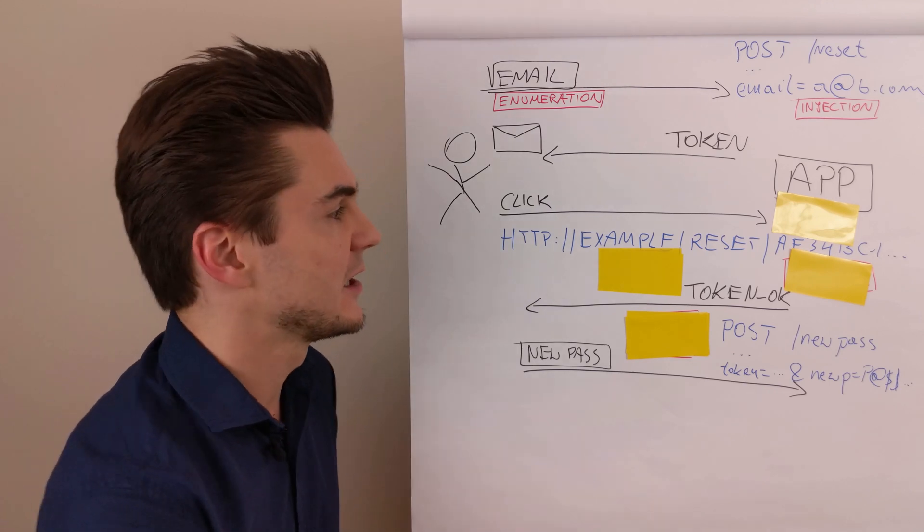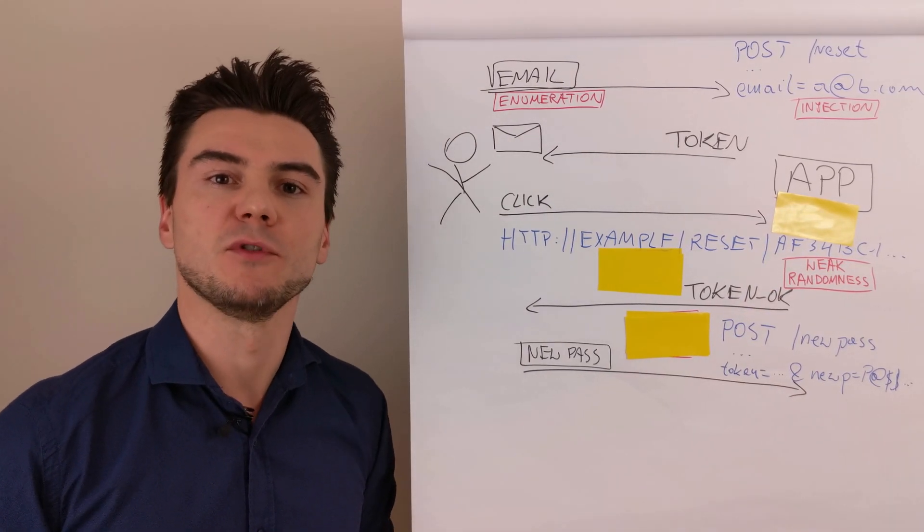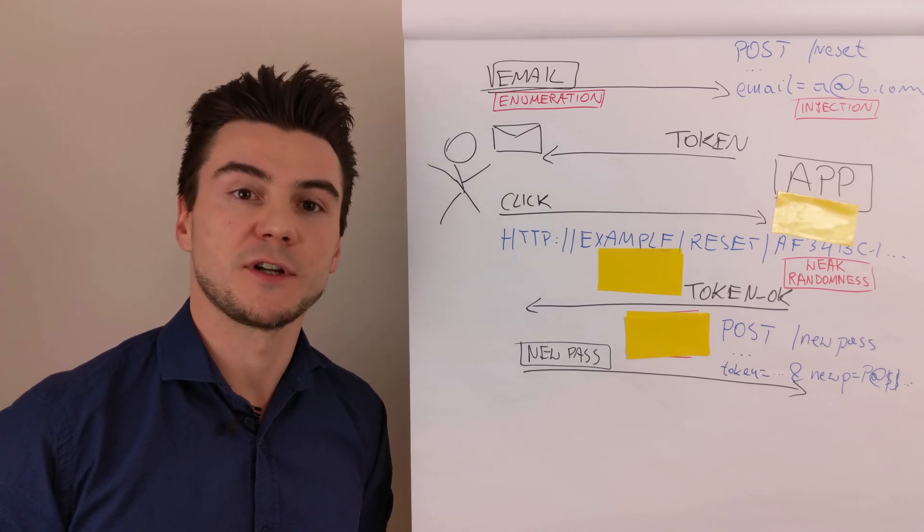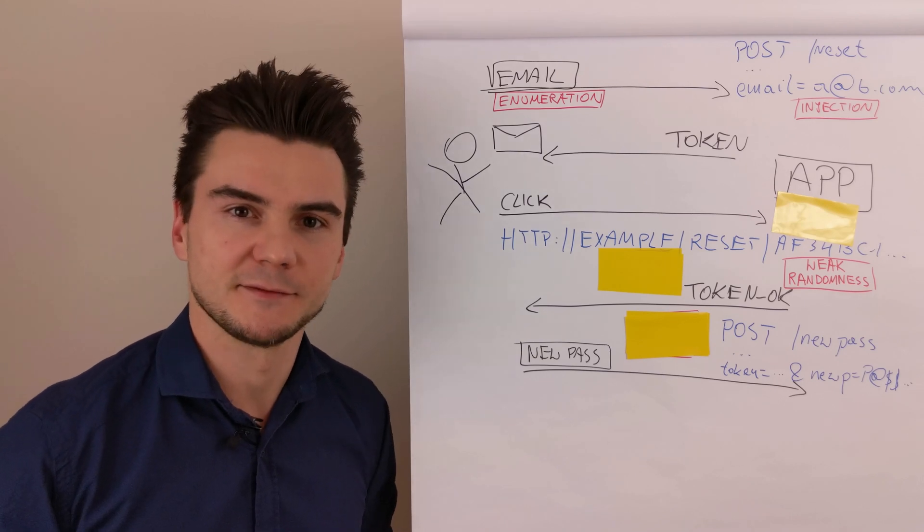Weak randomness of the token. What happens if the attacker is able to guess the token value for a given user? Then they are able to reset the password and take over the account.